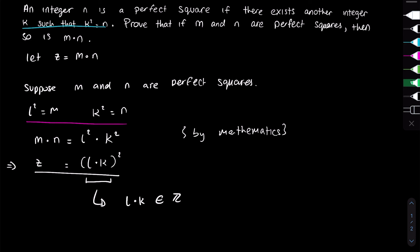Hence, we've proven that if m and n are both perfect squares, then their product m times n is also a perfect square.